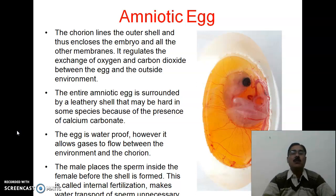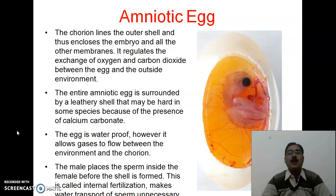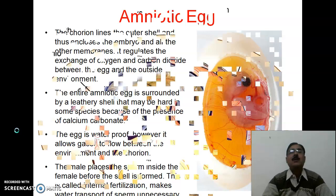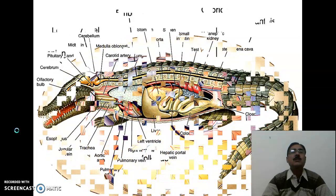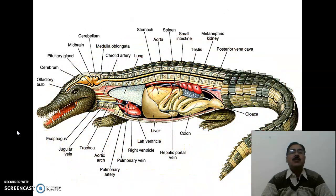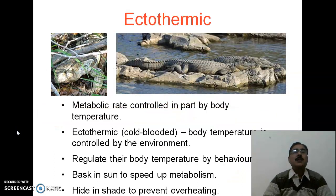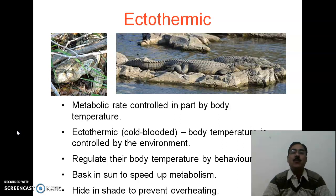The male places the sperm inside the female before the shell is formed. This is the basic structure of a crocodile, where the four-chambered heart is present — the left and right ventricles are clearly visible. Reptiles are ectothermic: the metabolic rate controls body temperature, making them cold-blooded. Body temperature is controlled by the environment, and they regulate it behaviorally — basking in the sun to speed up metabolism, and seeking shade to prevent overheating.